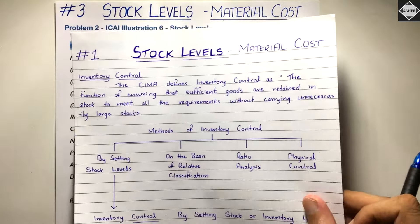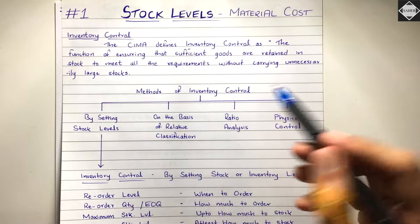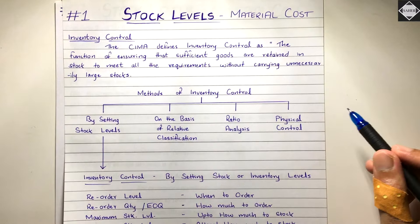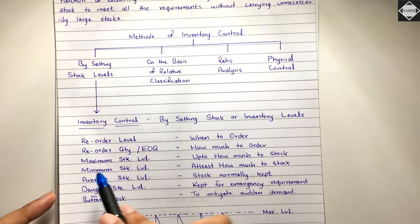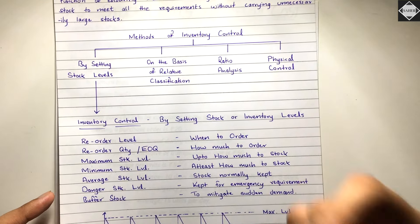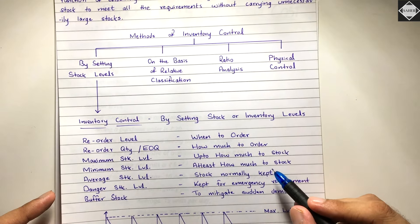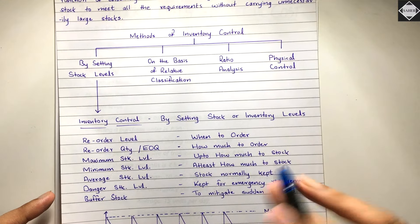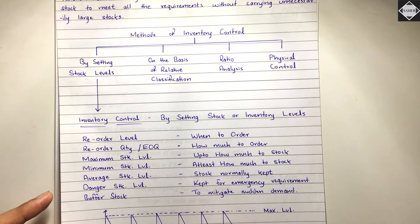In the first video we discussed the concept of stock levels — it's a method of inventory control where we set quantitative stock levels. We have a reorder level: when to order. Reorder quantity: how much to order. Maximum stock level: how much maximum you should stock your inventory. And then minimum stock level: how much minimum you should keep. And then average stock level: the stock that is normally kept throughout the year.